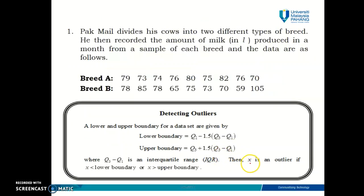So let's jump into the first example for this video. So this is an example which I created by myself. It is not provided in the slide in column. Padmael divided his cows into two different types of breed. He then recorded the amount of milk produced in a month from a sample of each breed and the data are as follows. So these are the amount of milk produced by cows in breed A. And these are the amount of milk produced by cow in breed B. So now let's try to identify, is there any outlier in any of these two breeds?